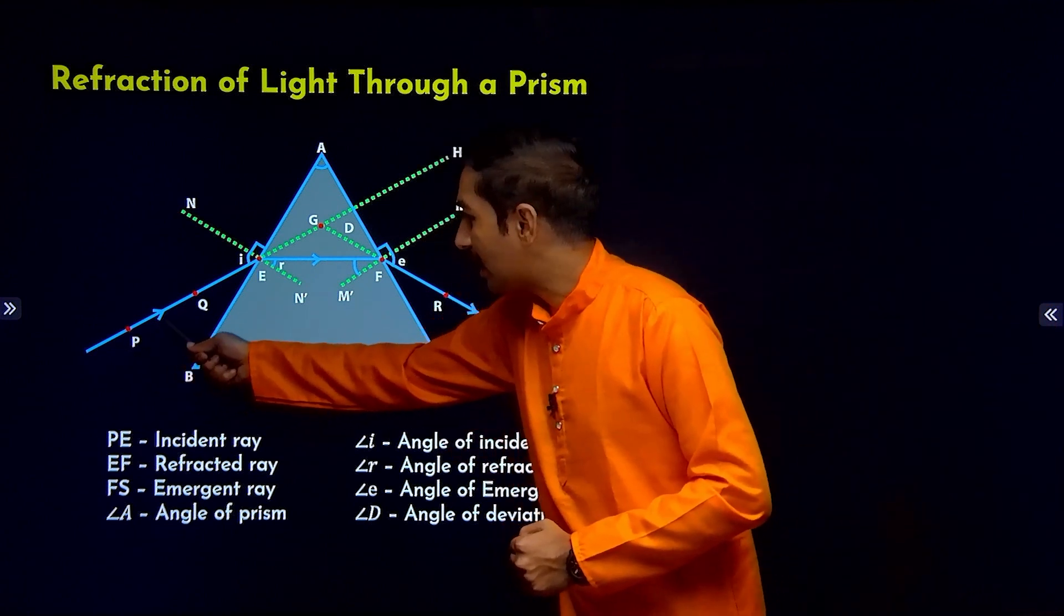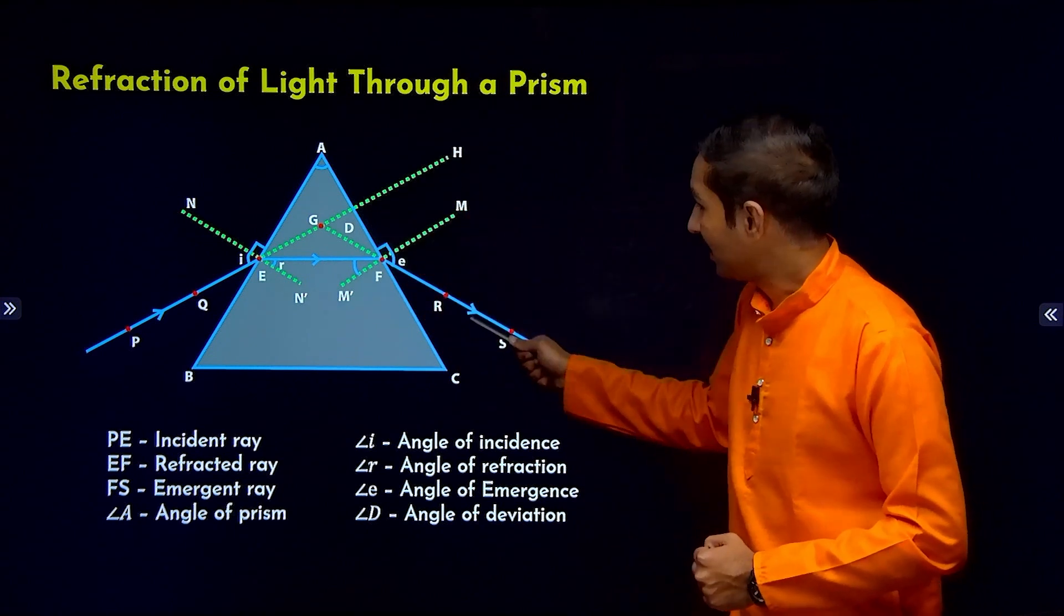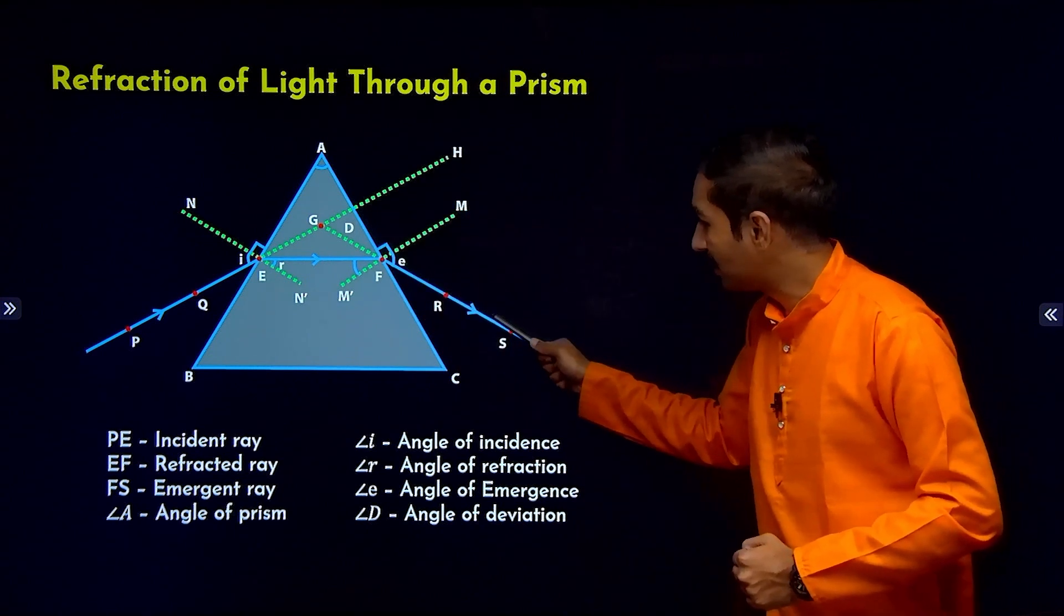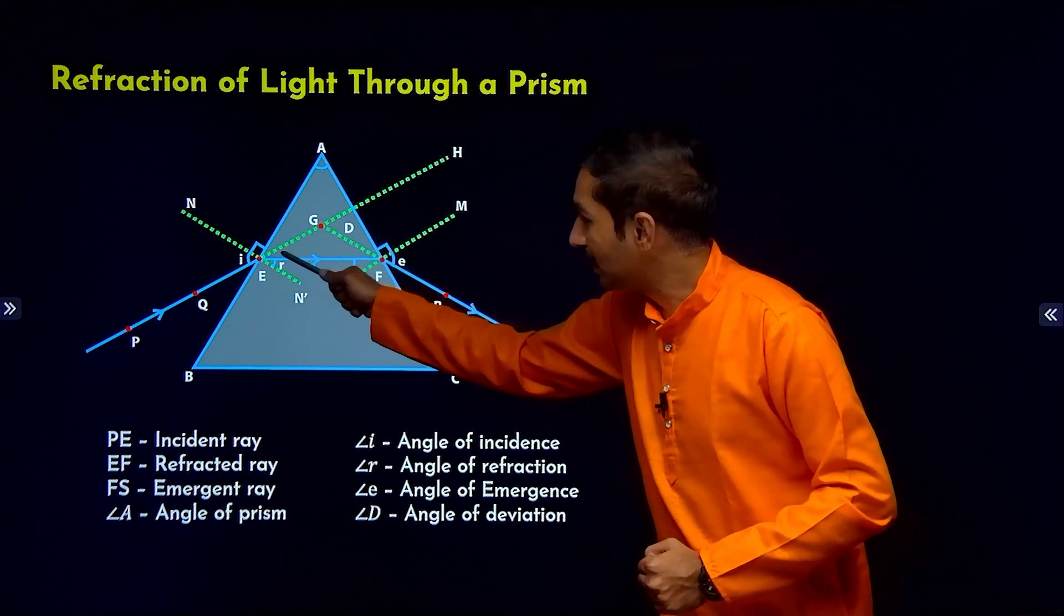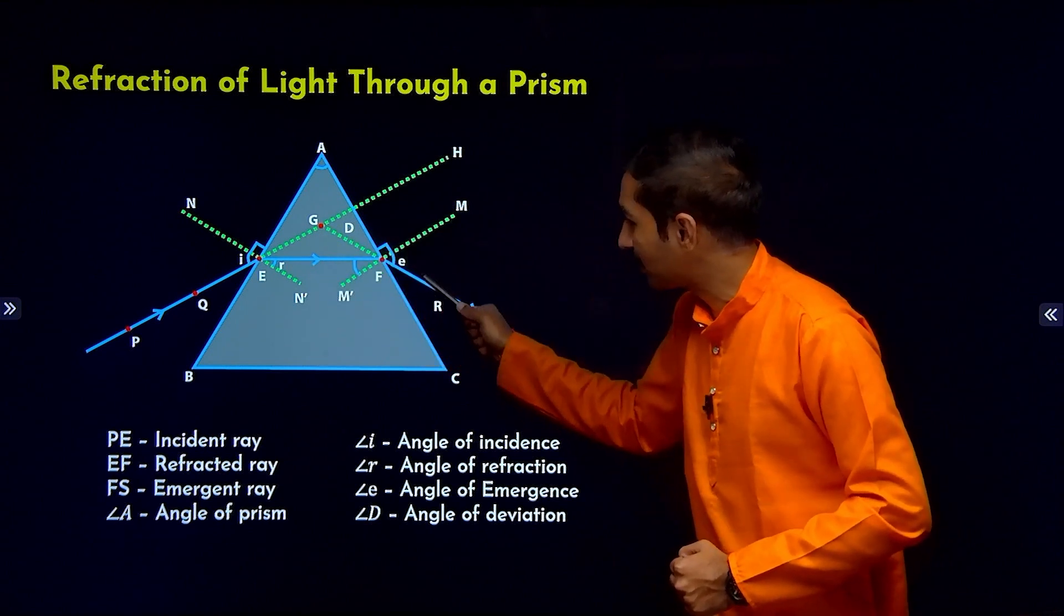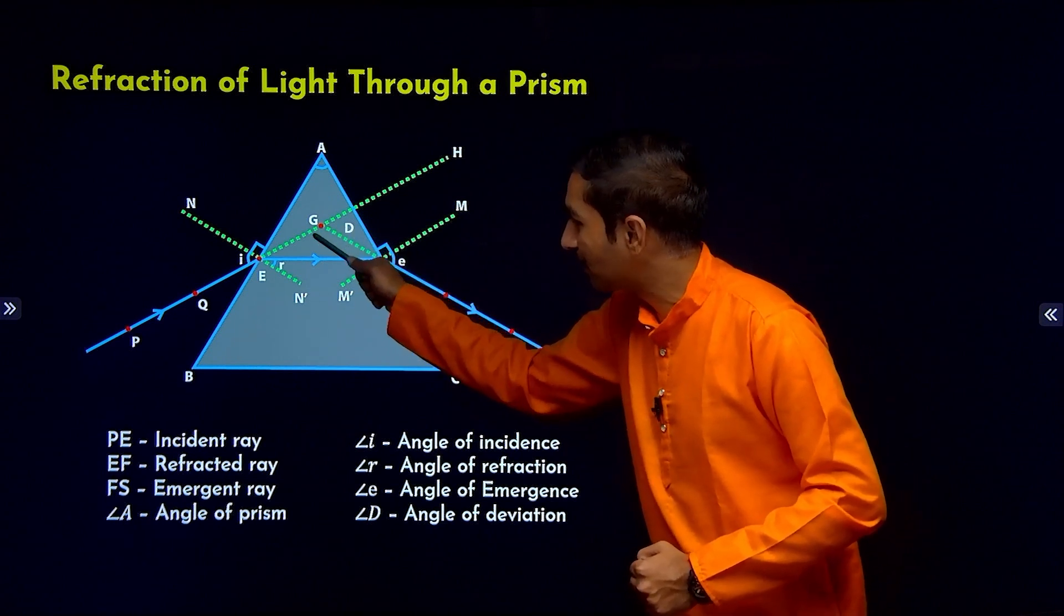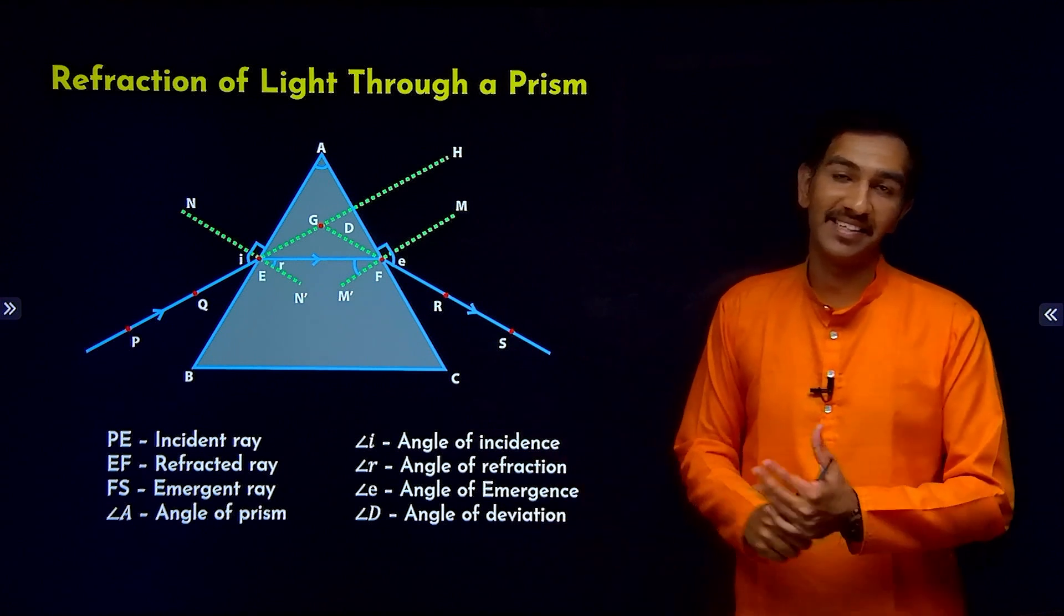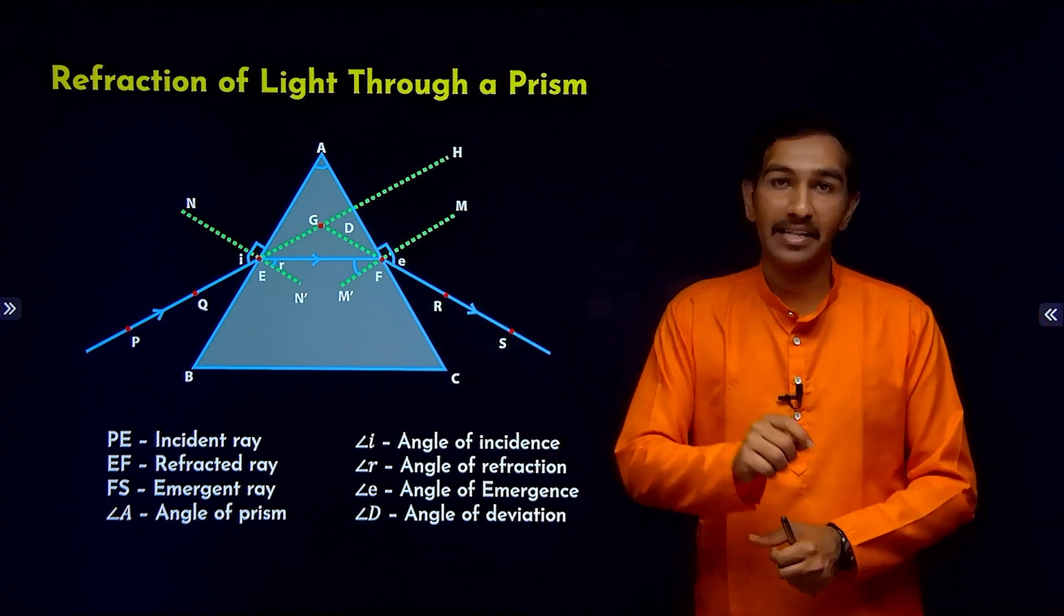So if the incident ray is not refracted, it would continue like this, correct. If we produce this refracted ray, it would go like this and meet here. So when the angle of incidence ray and refracted ray meet at one point, this angle is what we call angle of deviation. So let me explain this using a FET simulation.